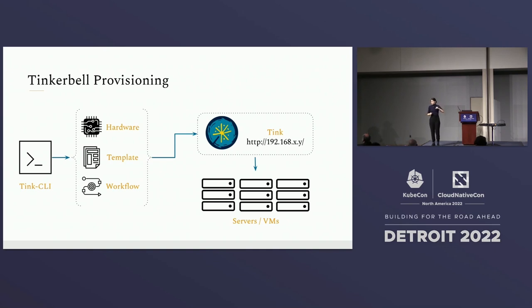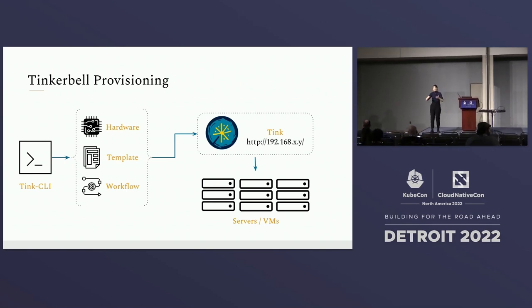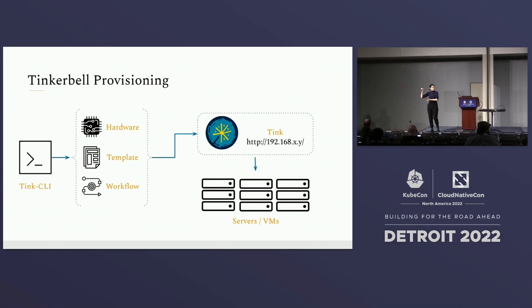Workflow attaches a hardware to a template — this is where you orchestrate things. If you have 10 Raspberry Pi machines, you can say that on five of them you want to install Windows and their respective dependencies, and on the other five install macOS and their dependencies. This is where you orchestrate how you want to deploy and manage your bare metal.